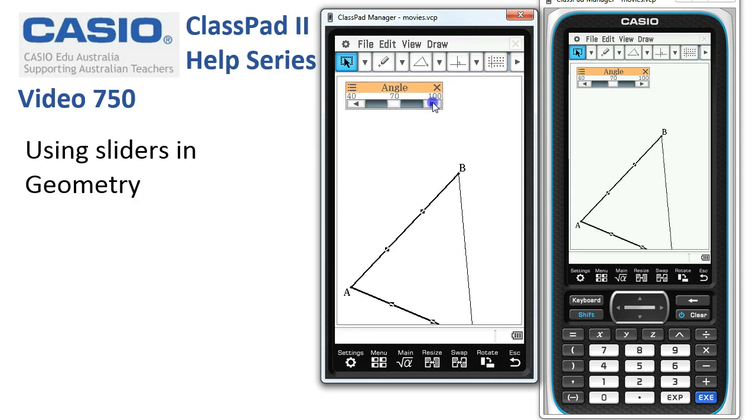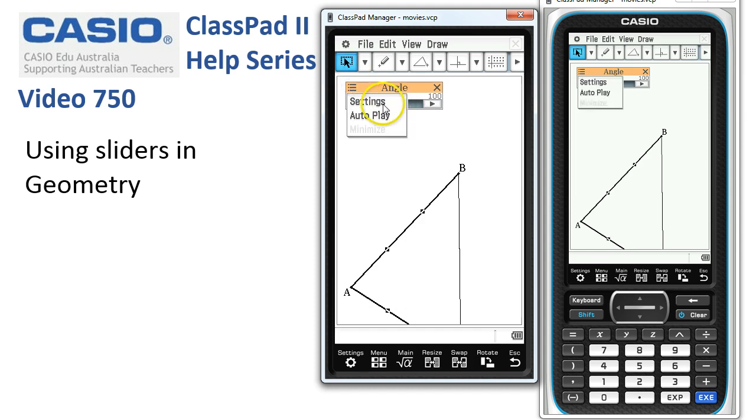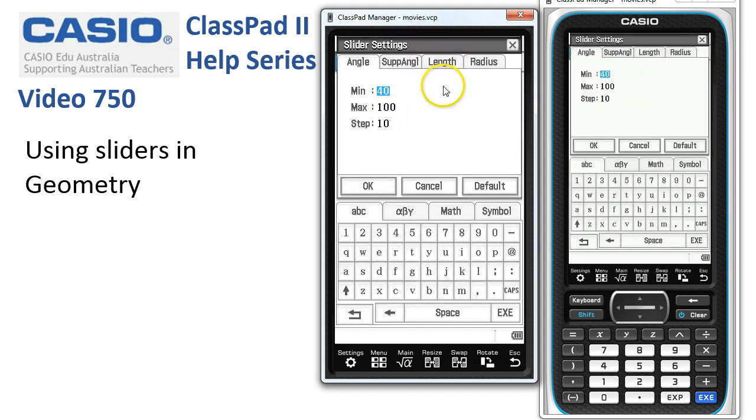I can also tap onto the options here and choose the settings. So if I wanted it to go from something other than 40 to 100 in steps of 10 degrees, I could let's maybe change that to 50 degrees to 80 degrees in steps of 5 degrees.